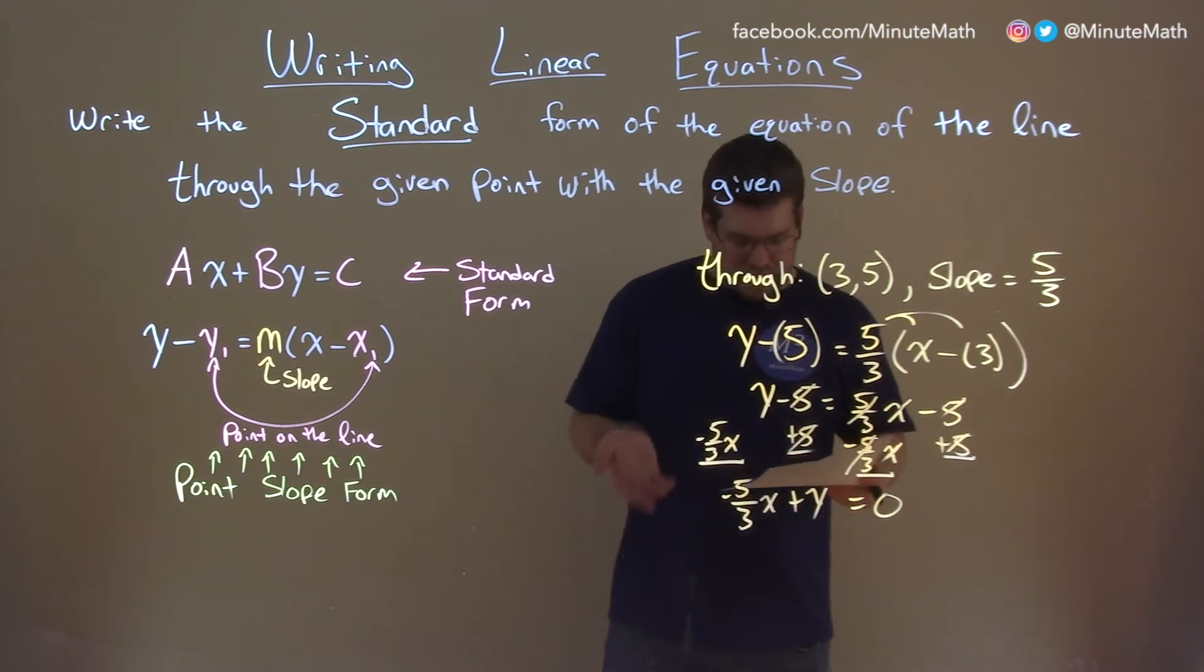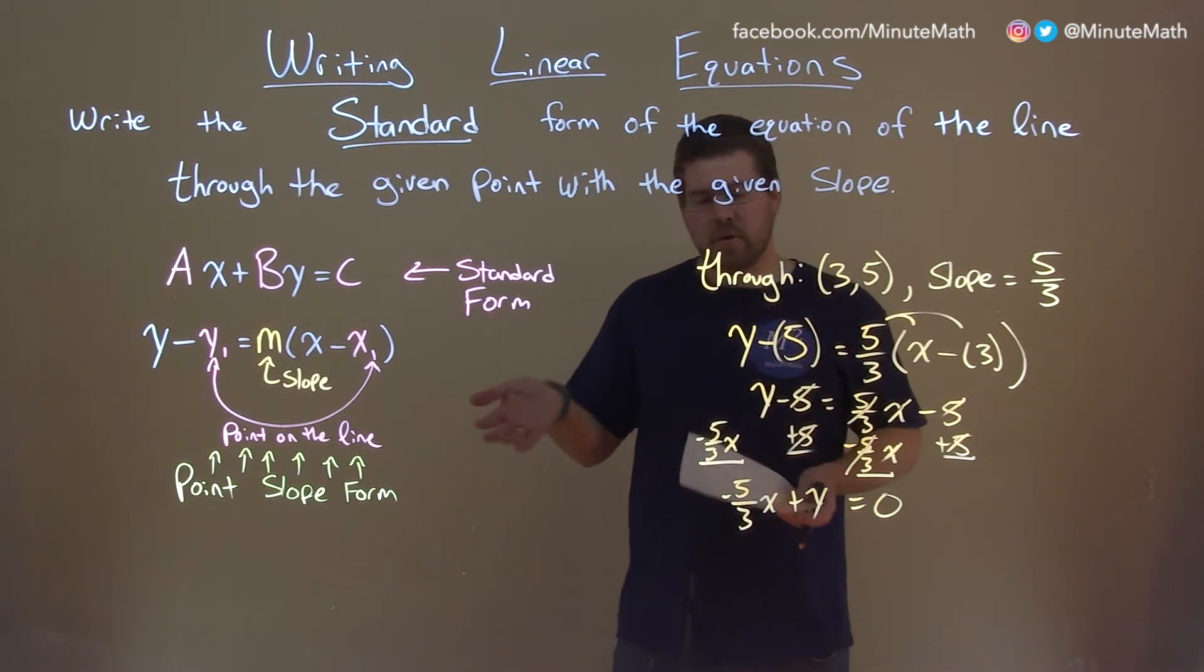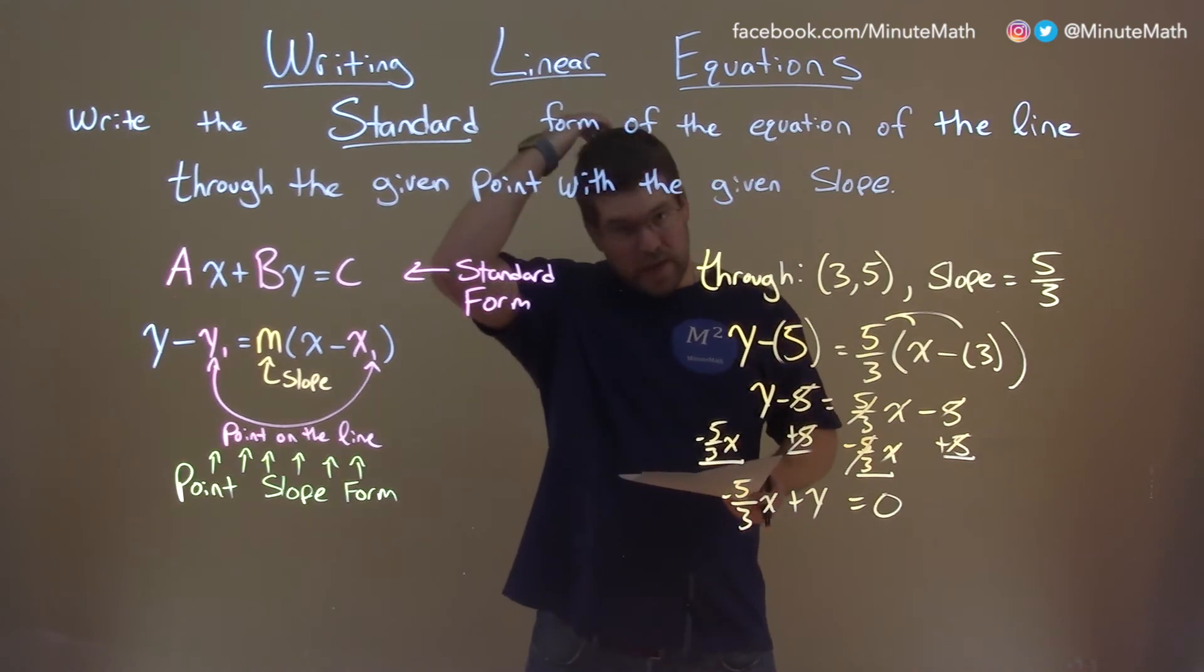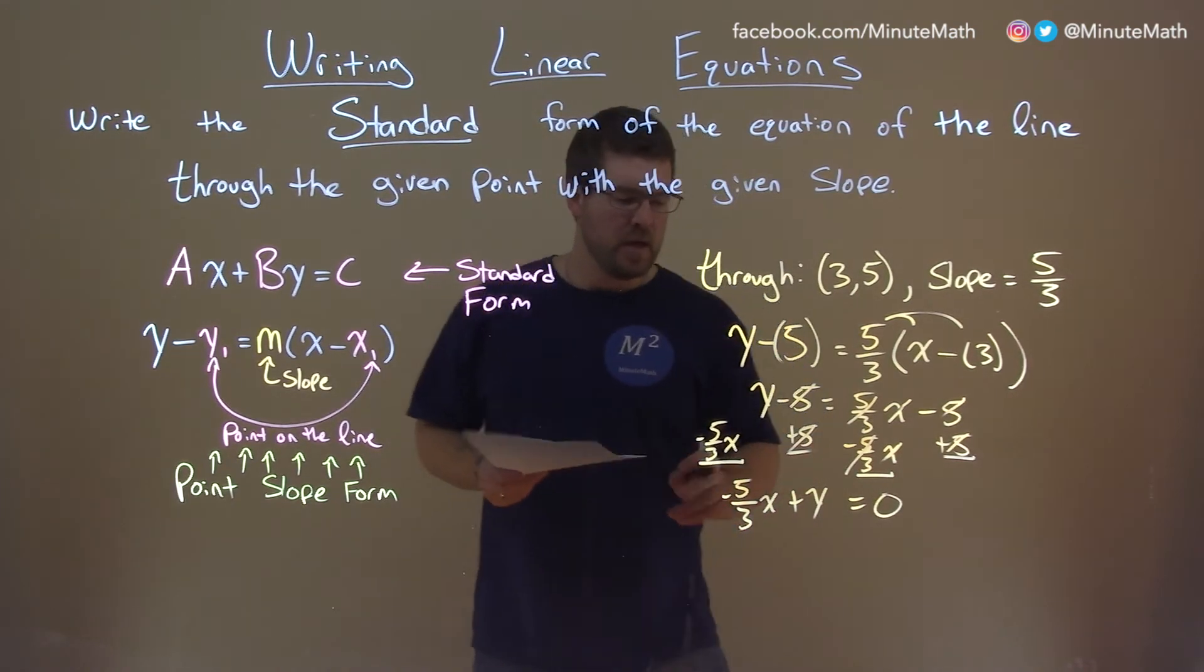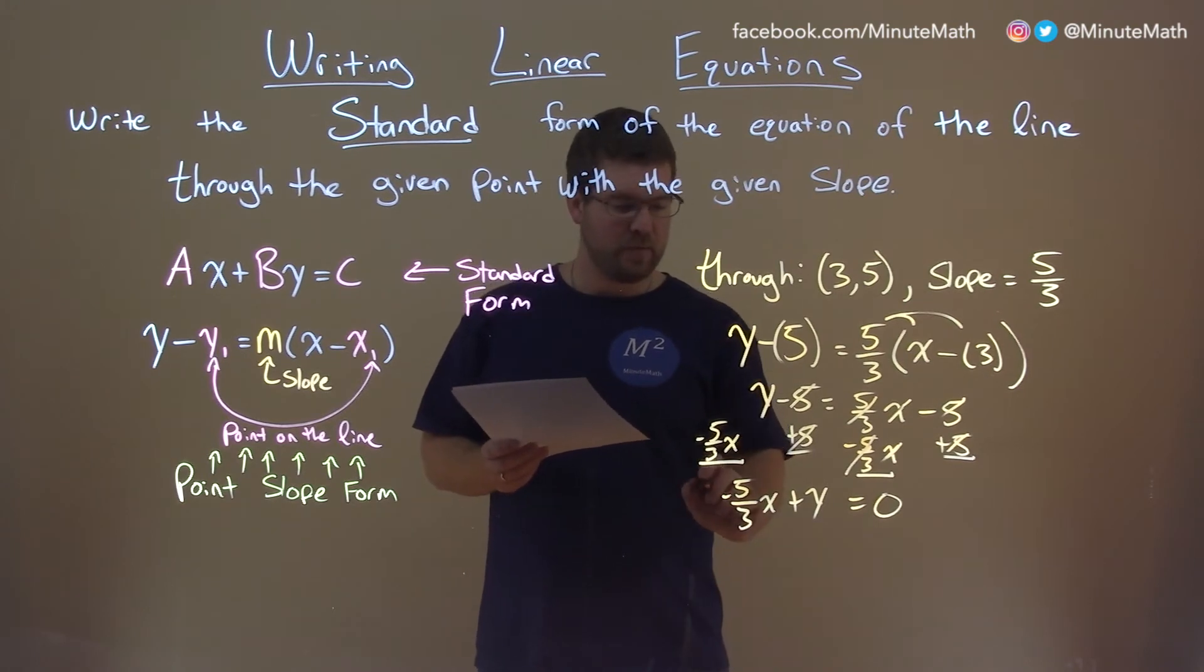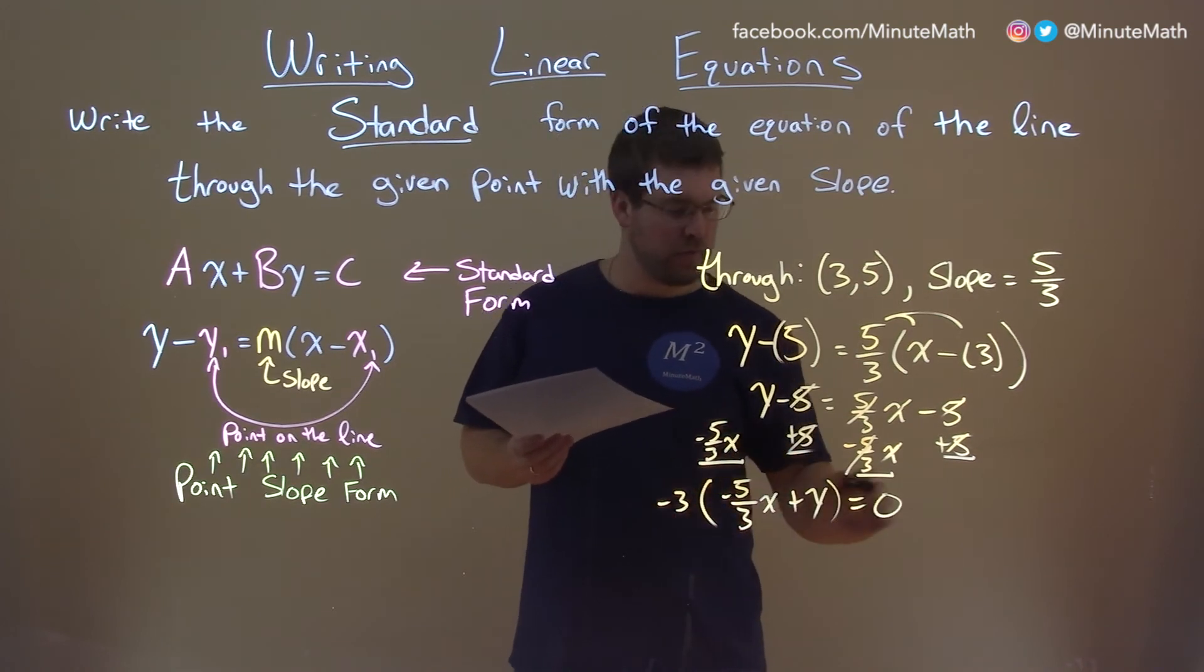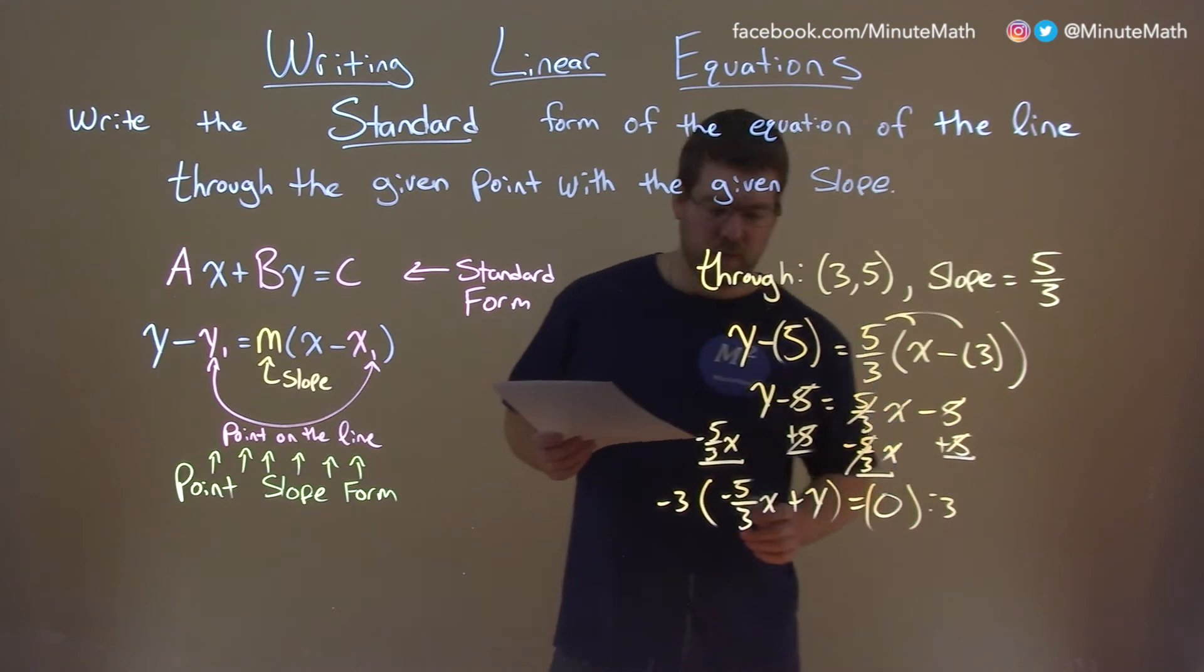But we wouldn't be completely done here. It's kind of up to you. Technically it's in standard form, but we try to make these integers if we can. So what I'm going to do is actually multiply everything by negative 3. And that's because the denominator is 3, and the negative here, I like to have a positive in front for the a value.